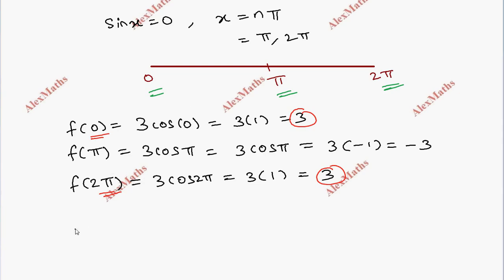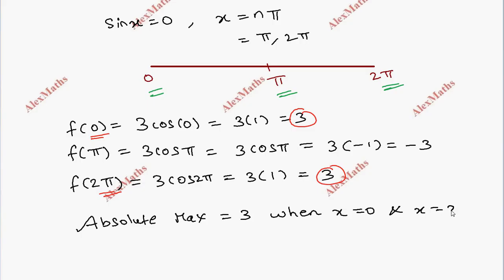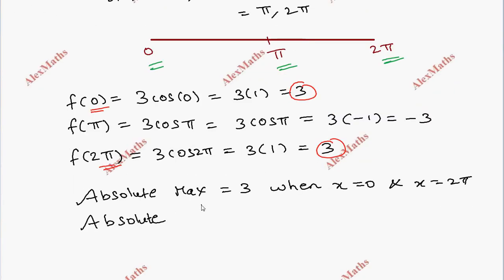Therefore, the absolute maximum is equal to 3, occurring when x = 0 and x = 2π. The absolute minimum value is −3, occurring when x = π.